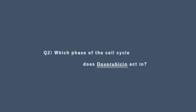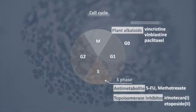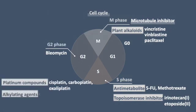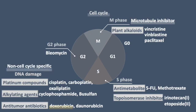Which phase of the cell cycle does doxorubicin act in? Antitumor antibiotics cause direct damage to DNA, classifying them as non-cell cycle-specific agents due to their broad impact on cells throughout various stages of the cell cycle.